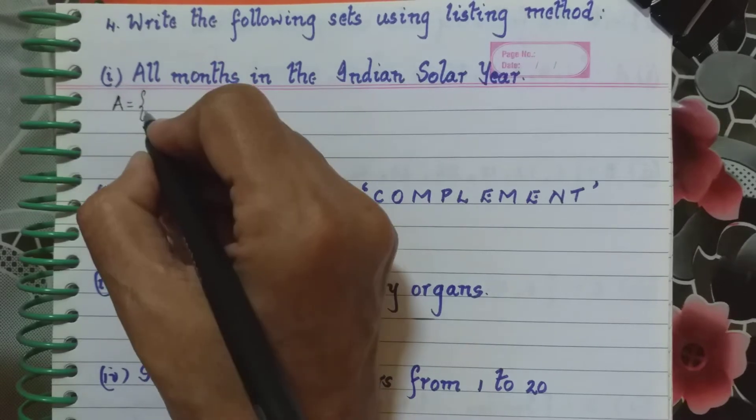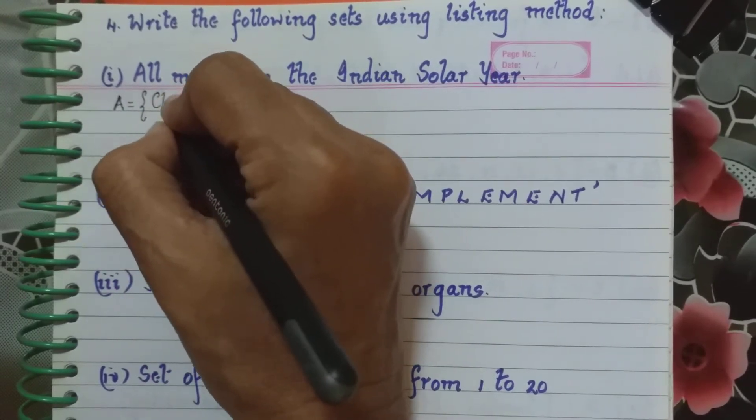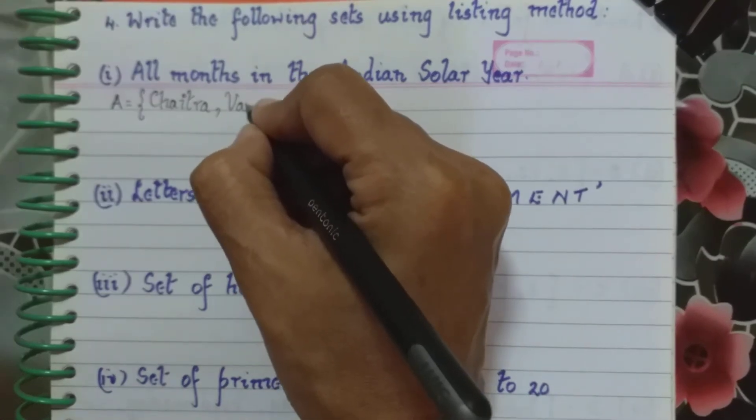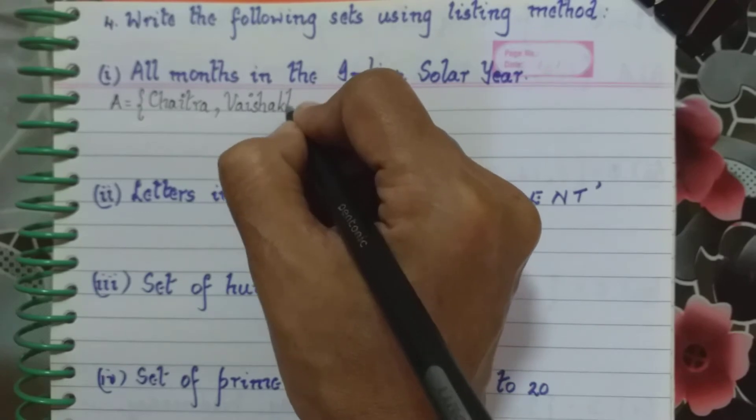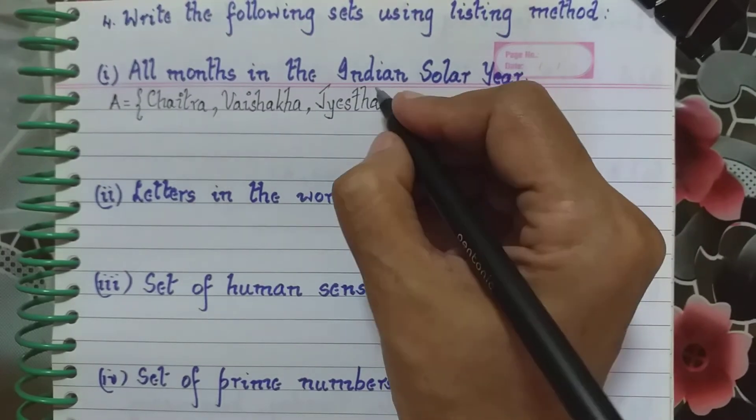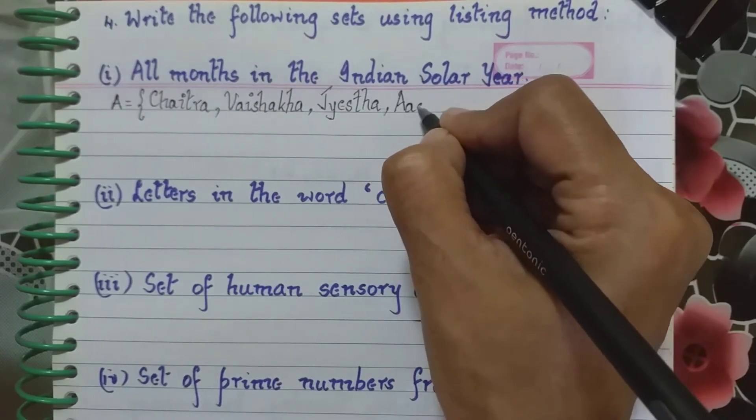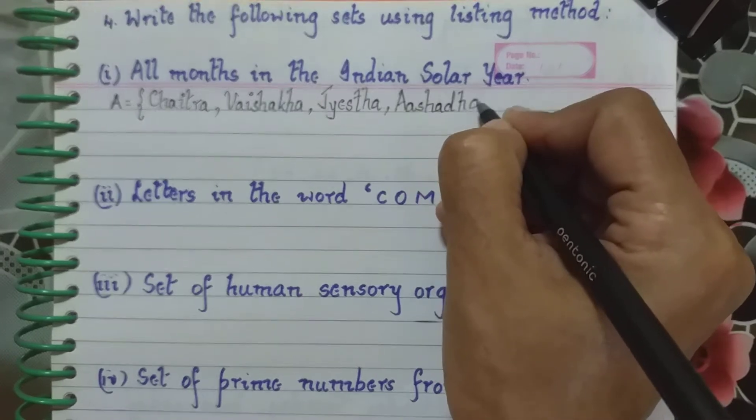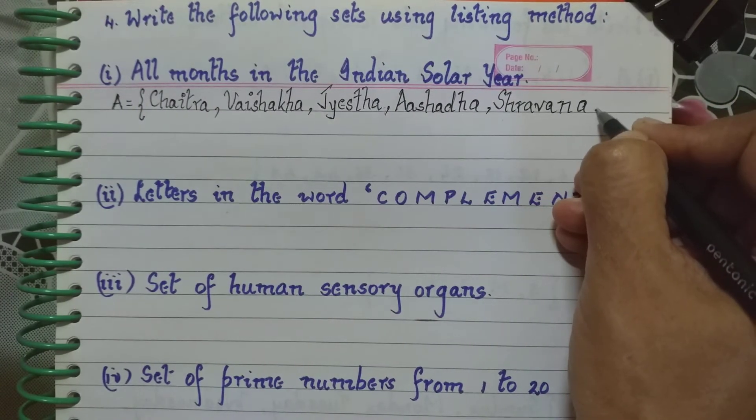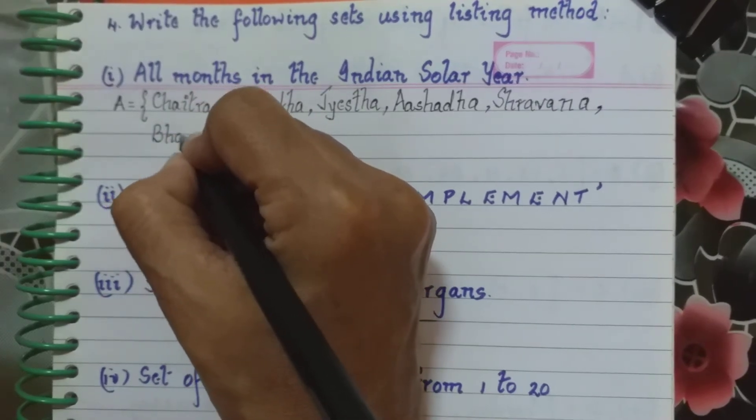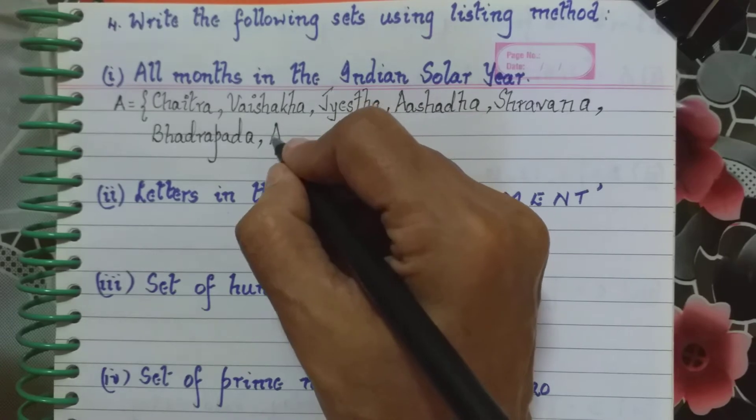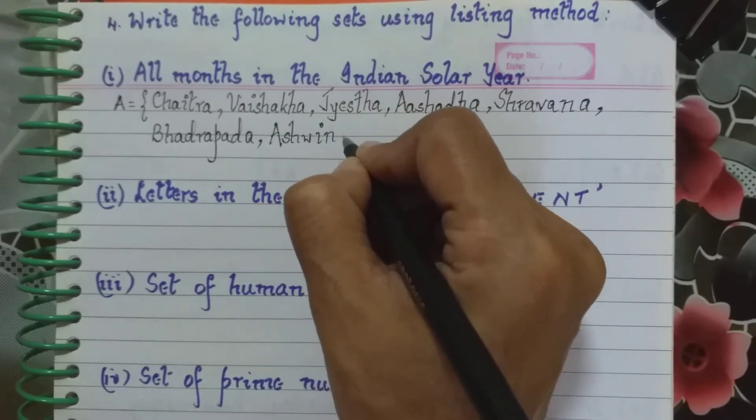So A is equal to, the first name here will be Chaitra, the second one is Vaishaka, then you have Jyeshtha, then we have Ashadha, then it is Shravana, next is Bhadrapada, Ashwina, Kartika.